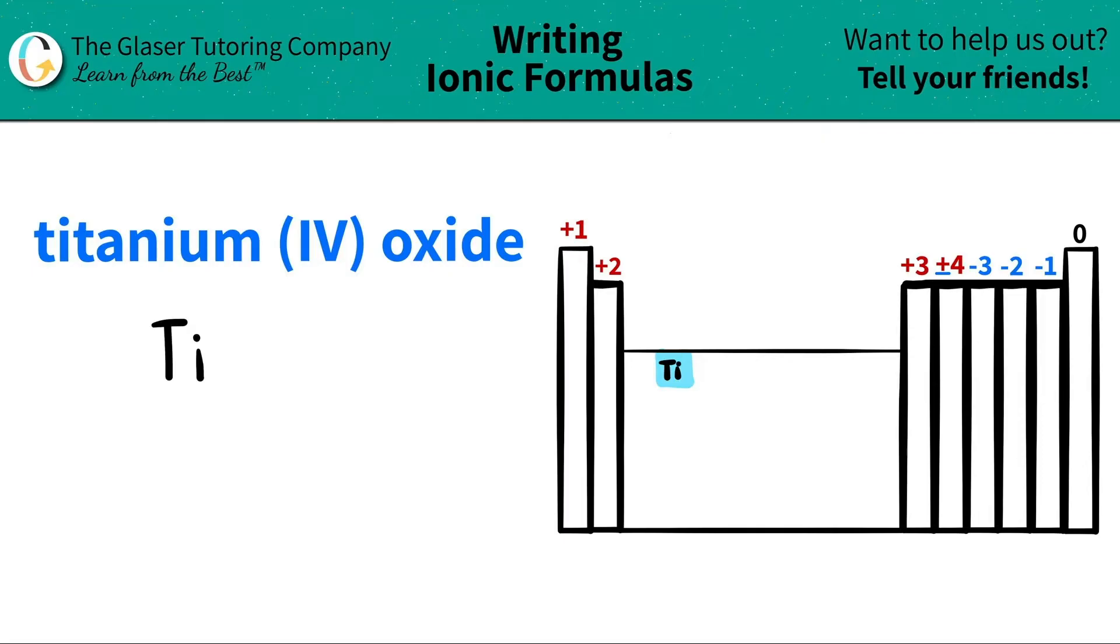But now what charge am I going to use in the upper right-hand corner? Titanium is in this group. Those are transition metals. And remember, transition metals have many different charges. So what charge am I going to use?